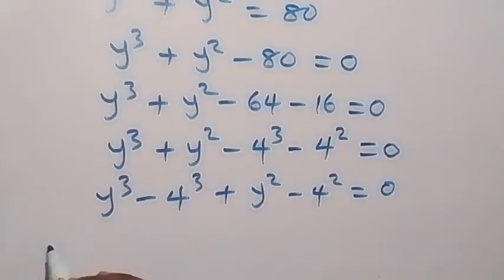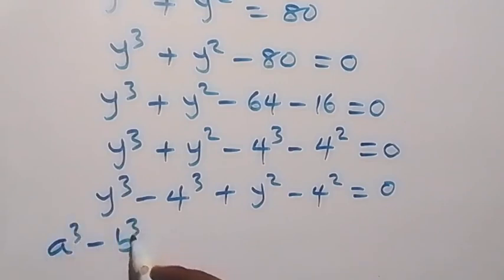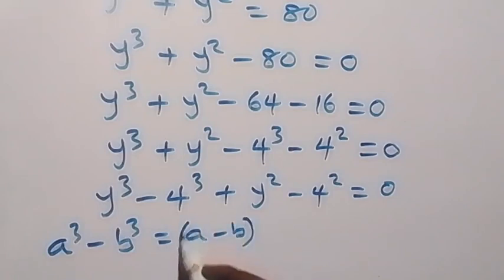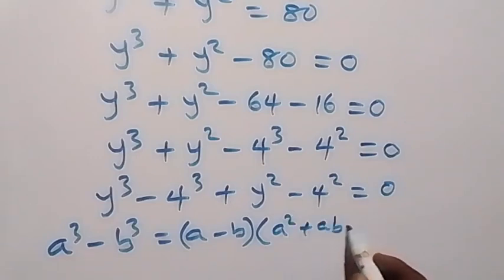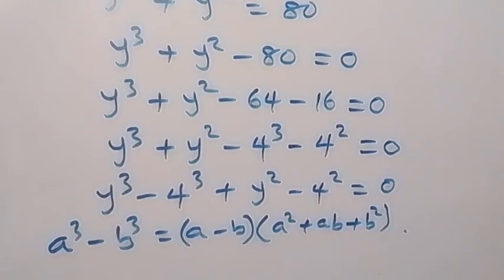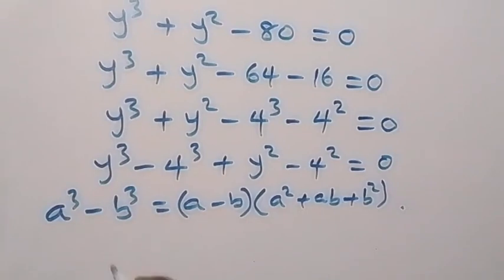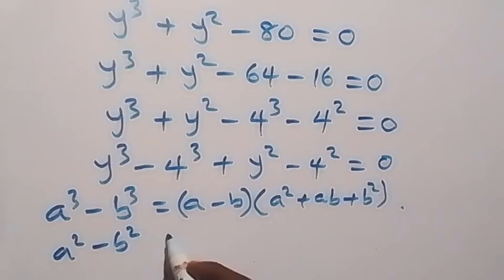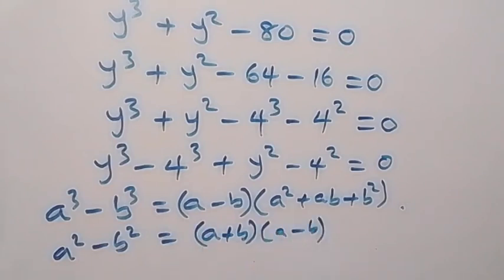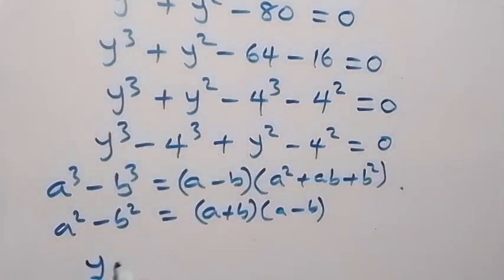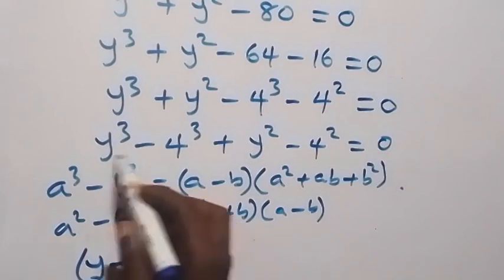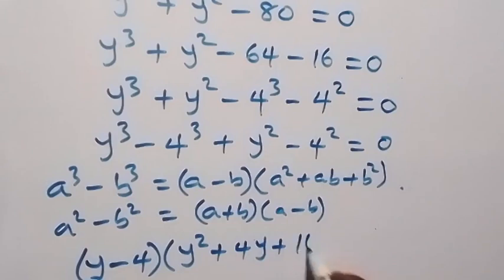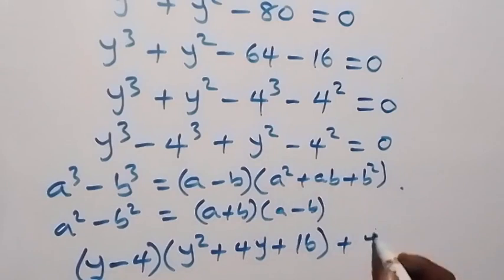From these two terms, it follows from the difference of cubes: a cubed minus b cubed equals a minus b times bracket a squared plus ab plus b squared. And also the second two terms follow from the difference of two squares: a squared minus b squared equals a plus b times bracket a minus b. Applying this here, the first two terms become y minus 4, times bracket y squared plus 4y plus 16, and the last two terms give y plus 4 times bracket y minus 4.